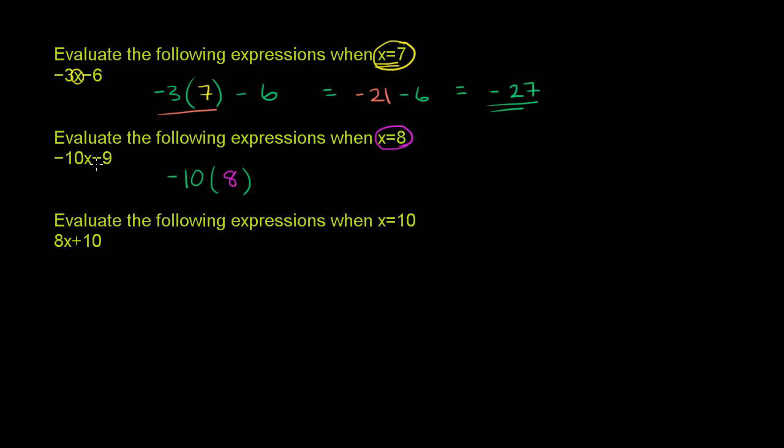Where we saw an x, we now have an 8, minus 9. And this is going to be equal to negative 10 times 8 is negative 80. And then we want to subtract 9 from that. So negative 80 minus 9, that is negative 89.